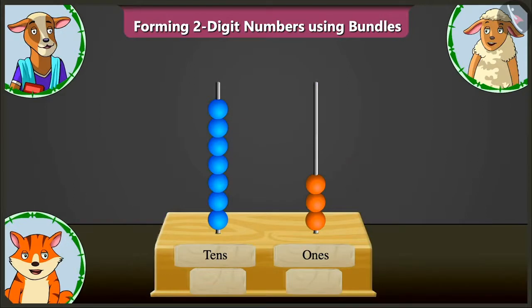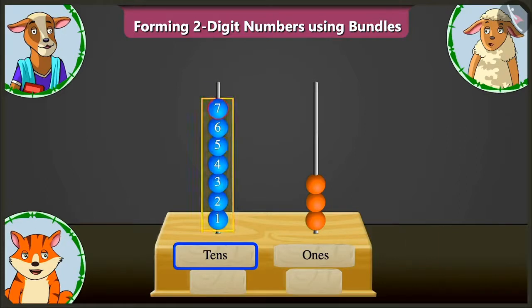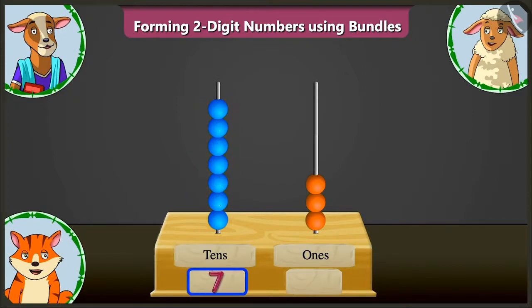Lily, you tell us. In the abacus given here, in the tens box, there are one, two, three, four, five, six and seven beads. So, in the tens box, we have to write seven. Very good.